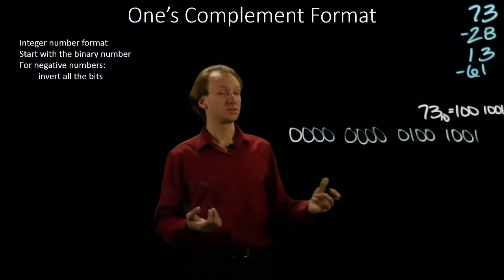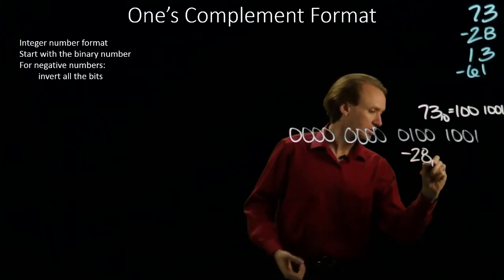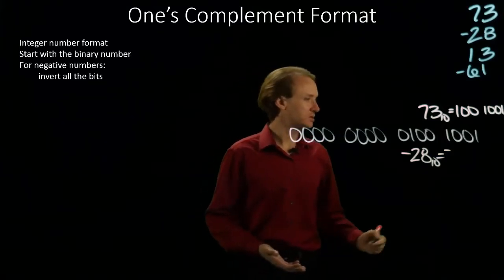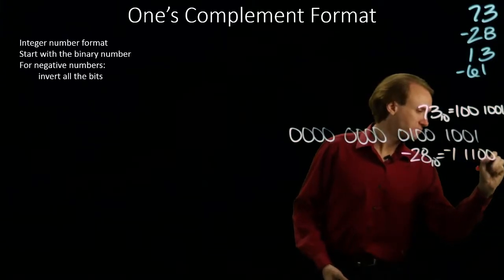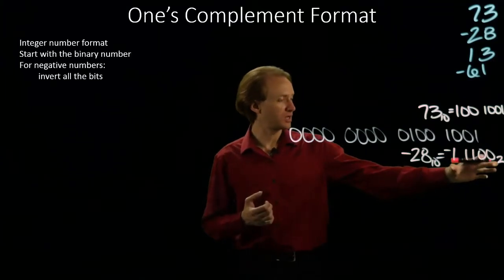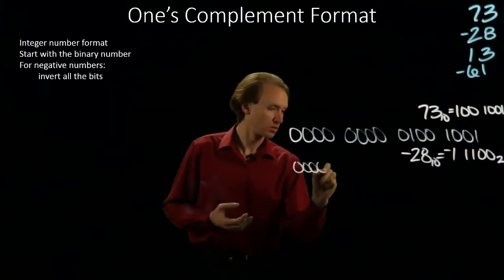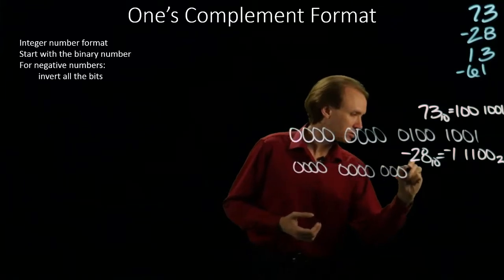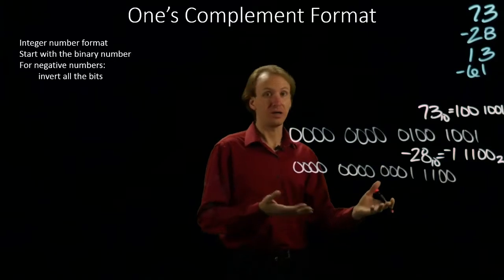Our next number is negative 28. So, this is a negative number. And 28 is 16 plus 8 plus 4. So, I'm going to start again by writing out the magnitude of my number as a positive number. It has 16 bits. And if I wanted positive 28, I'd be done.